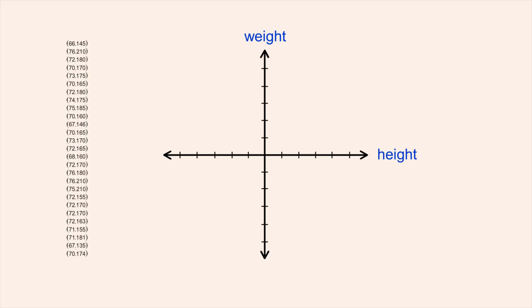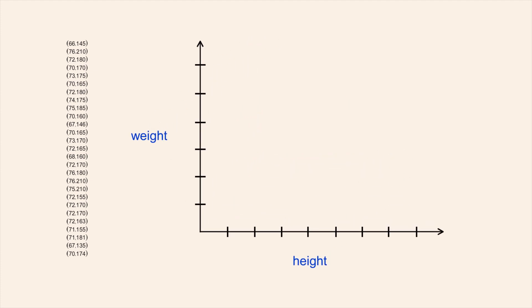Since height and weight can only have positive values, we can eliminate everything except the first quadrant of the graph. We will mark the horizontal axis in increments from 0 to 80 inches and the vertical axis in increments from 0 to 300 pounds.